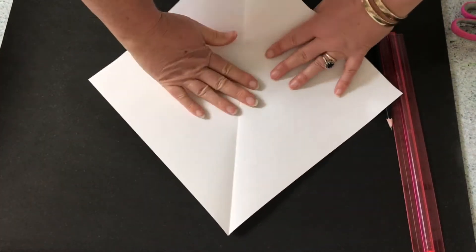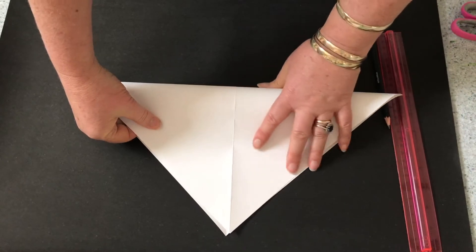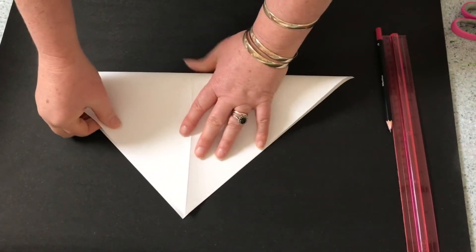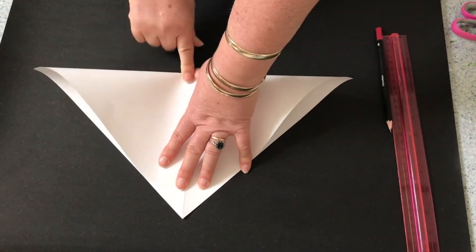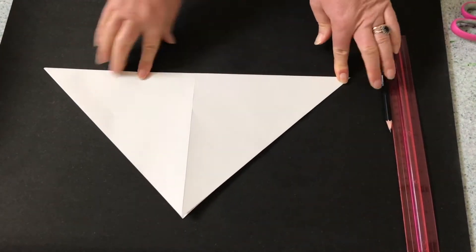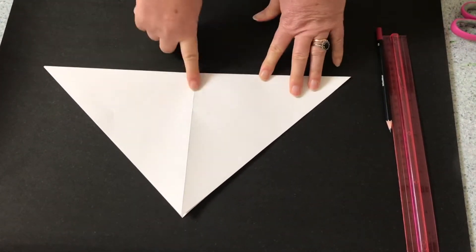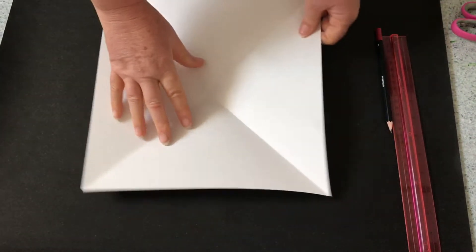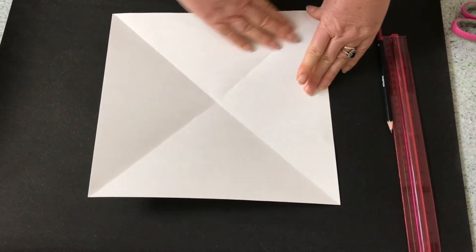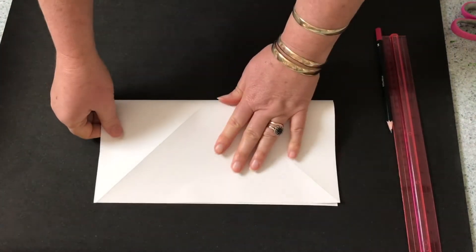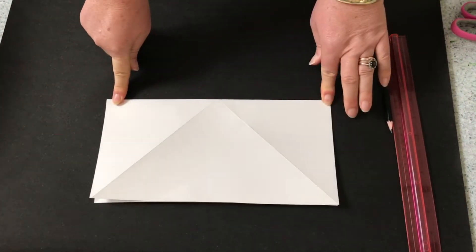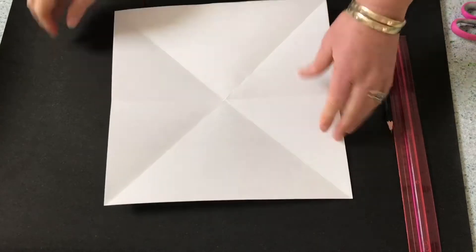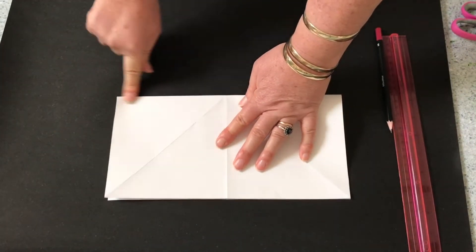Fold your paper again across the other diagonal. This will give you an X or multiplication sign fold in your square. Open it up again and this time fold on the right angles, resulting in a plus fold in your paper. First one way, then open up and do it the other way again. These folds will become guides for drawing our petals.